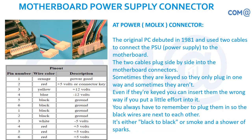If you reverse the power supply connection, you will not be able to connect it normally. However, some engineers may forcefully connect black with red. The black wire means grounding — zero volts — and red means plus five volts. If you provide plus five volts into a zero-volt grounding point, the motherboard will get burned or the ICs will get short-circuited. That is the risk of incorrectly connecting the power supply.